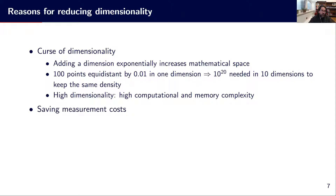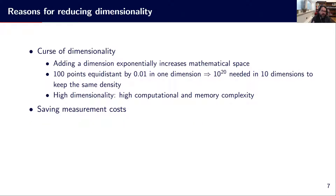Another reason for reducing dimensionality is to save measurement cost. We may need to manipulate or measure something. If there is a human in the loop doing the measurement, or if there are tests requiring some compounds, manipulation, or devices, it has a cost. So if we want to save that cost, we may just look to reduce the measurements and make use of fewer measurements.